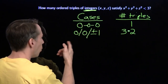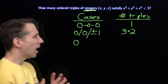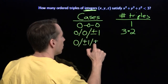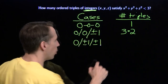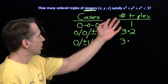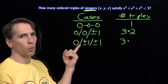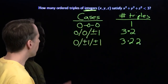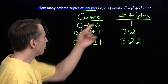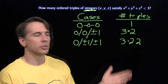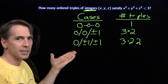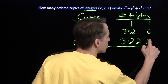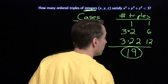In my next case, what if only one of them is zero? If only one of them is zero, then the other two have to be plus or minus one. I have three choices for the one that's going to be zero, and then for each of the other two variables, I have two choices — positive one or negative one. That gives three times two times two equals twelve. My next case would be none of them is zero, but that's impossible — each non-zero variable squares to at least one, so the sum would be three or higher. So these are all my cases. Adding them up: 1 plus 6 plus 12 equals 19. And we're done.